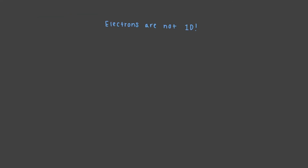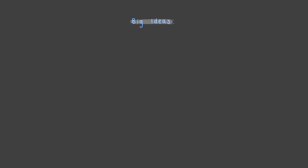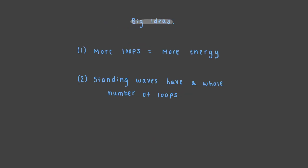But electrons are not one-dimensional — they are three-dimensional waves. In the next video, we will see how we can take the big ideas we learned here and apply them to 3D electron waves.